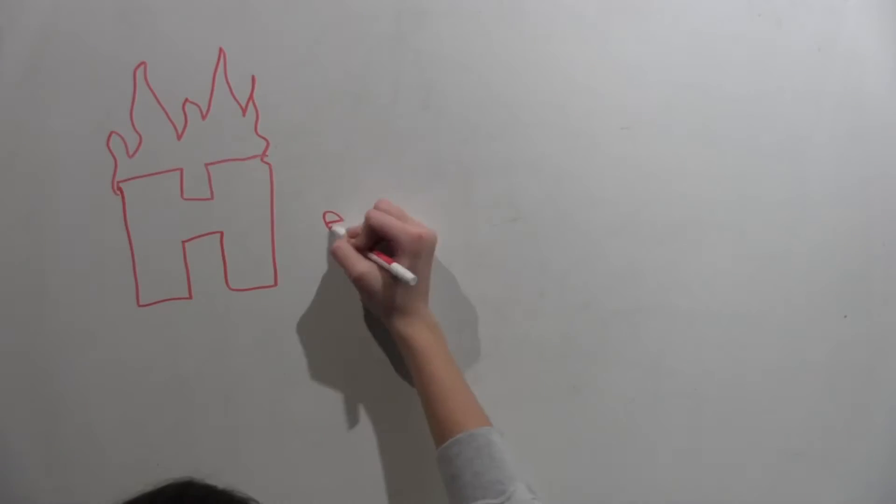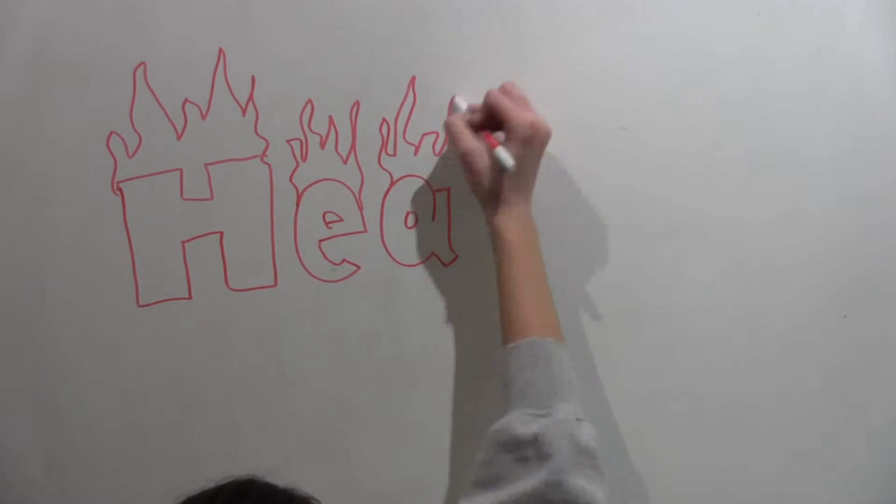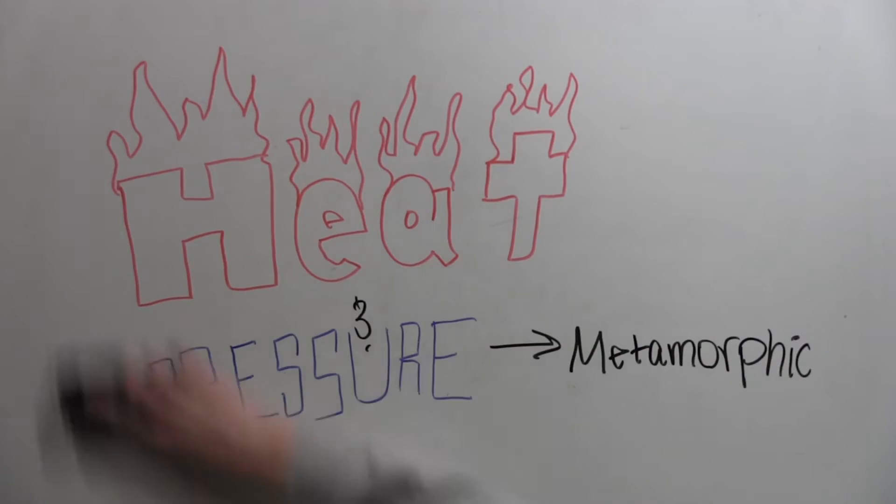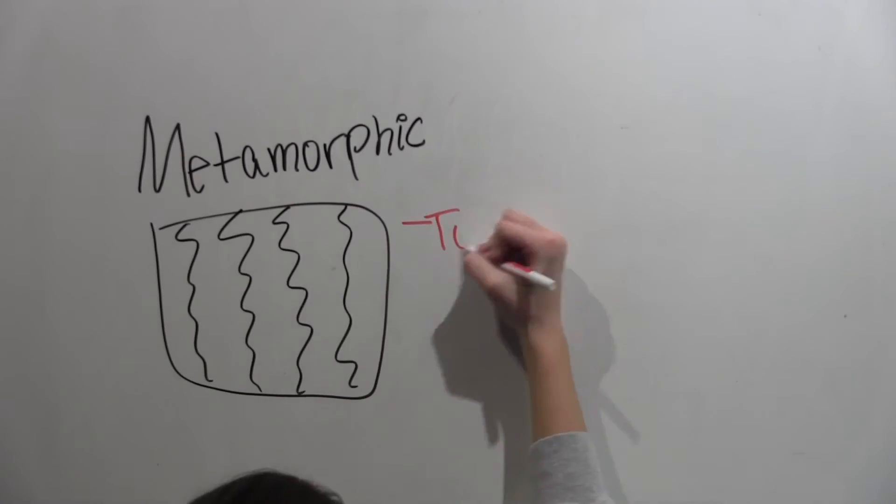Last but not least is the metamorphic. These are formed from heat and pressure on Earth's materials. An example of metamorphic rocks would be tuff, obsidian, and granite.